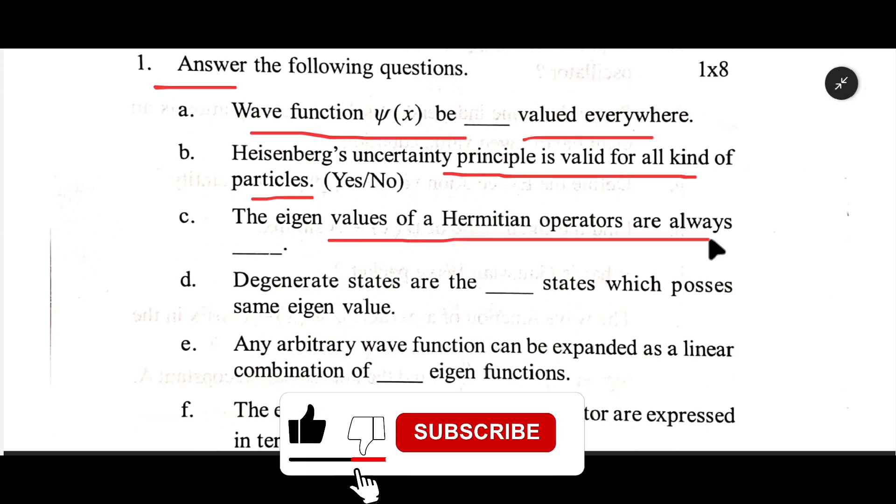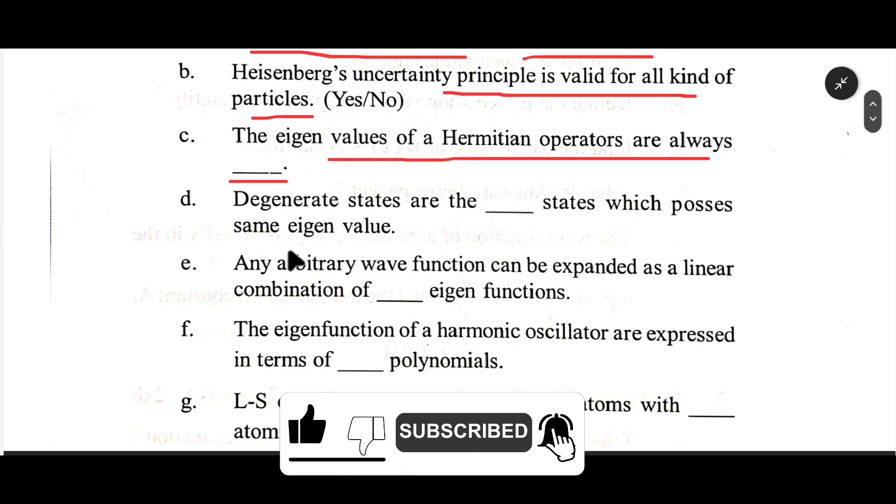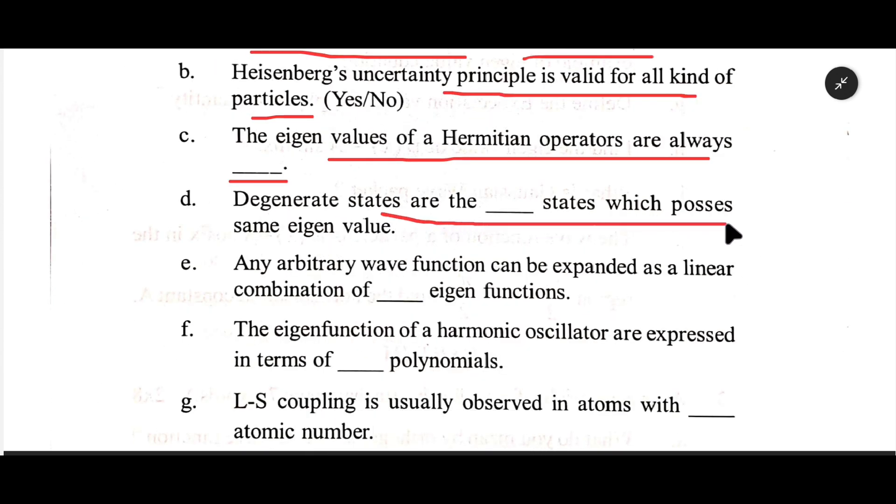The eigenvalues of a Hermitian operators are always dash. d. The degenerate states are the dash states which possess same eigenvalue.